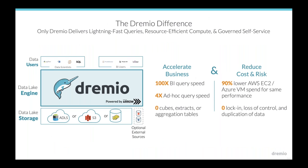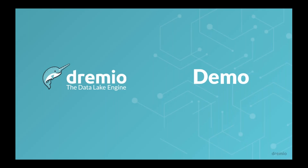To summarize: Dremio gives you lightning-fast queries directly on your data lake storage. You don't have to copy or move data around to various data warehouses, cubes, or extracts anymore. It's very resource-efficient and gives you a governed environment when you need it. Much faster query speeds compared to SQL engine alternatives, much lower cost and risk — you don't have to worry about data getting lost or locked in, or having copies of data floating around, because you're accessing and querying your data right where it lives in S3.